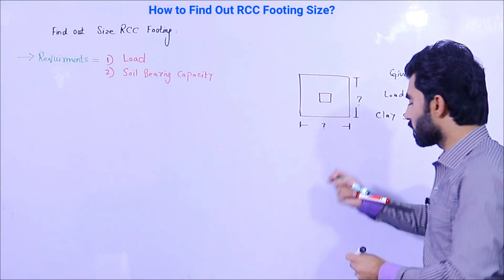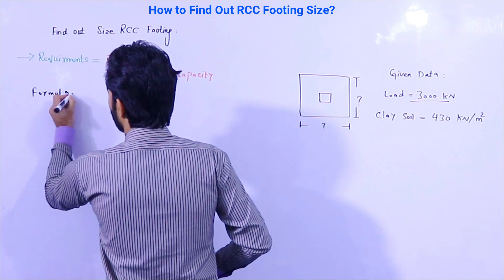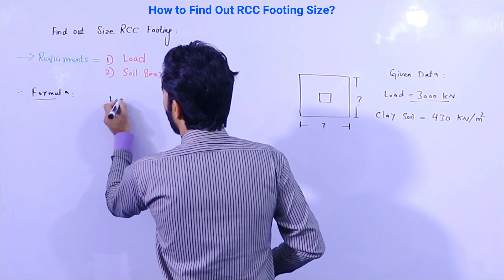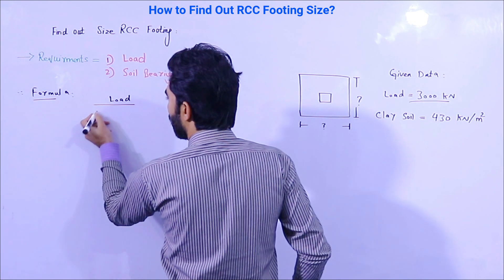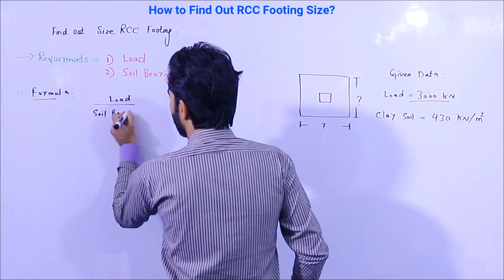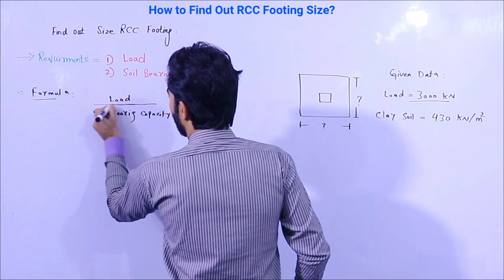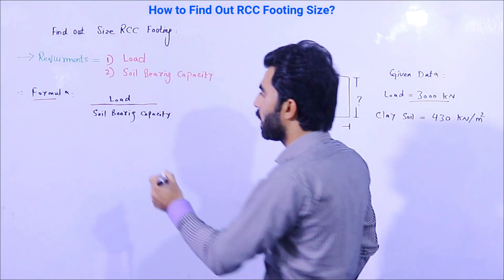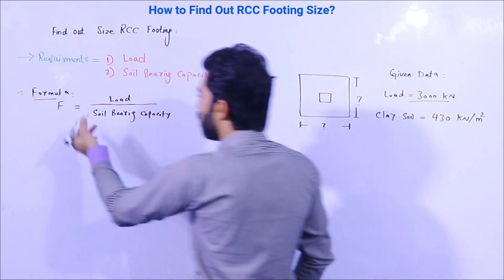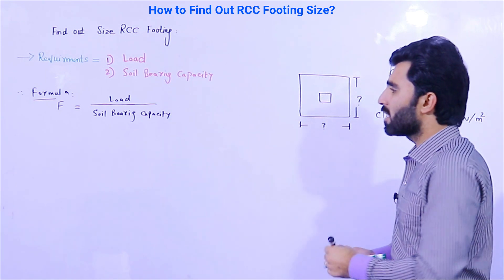The formula is: Foundation Area (F) = Load divided by Soil Bearing Capacity. This is the formula to find out the size of the footing. Now let's apply the given data to this formula.